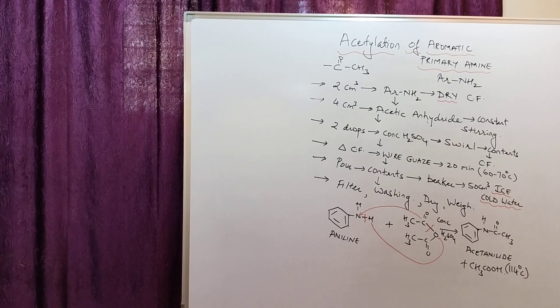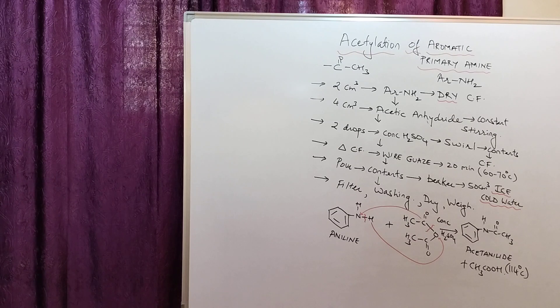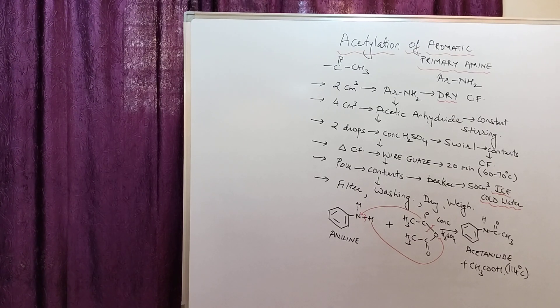And the reaction is here in front of you. Aniline plus acetic anhydride. The reaction takes place in presence of concentrated sulfuric acid, resulting in the formation of the final product, that is acetanilide. And the information regarding acetanilide is, it's a white solid with a melting point of 114 degrees Celsius. So I'm sure you have understood synthesis very well. Thank you very much.